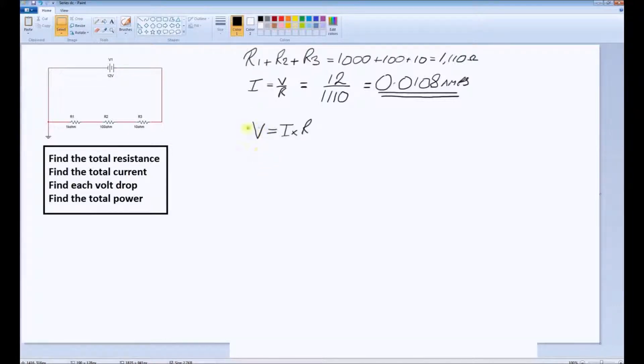So, to find the pressure drop, or the volt drop, across the first resistor, we'll call it V1, it's equal to the resistance, 1000 ohms, times the current flowing through it, 0.0108 amps.